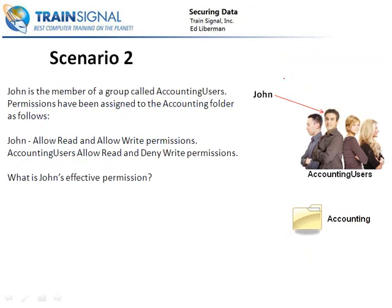In another scenario: John is a member of Accounting Users. John individually has been allowed Read and allowed Write permission. The Accounting Users group has been allowed Read and denied Write. What is John's effective permission? John individually has allow Read and allow Write. The Accounting Users are also allowed Read, so John will be allowed to read. But the group has denied Write, and deny always overrides allow. So John's effective permission is that he will be allowed to read and explicitly denied the ability to write.